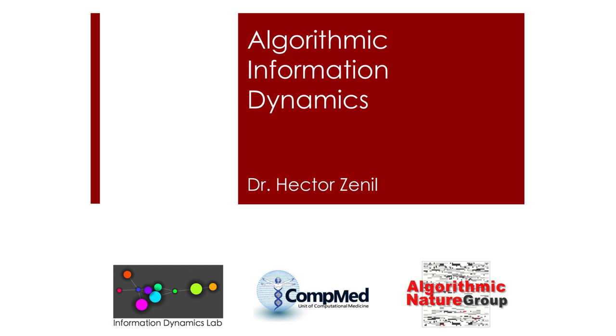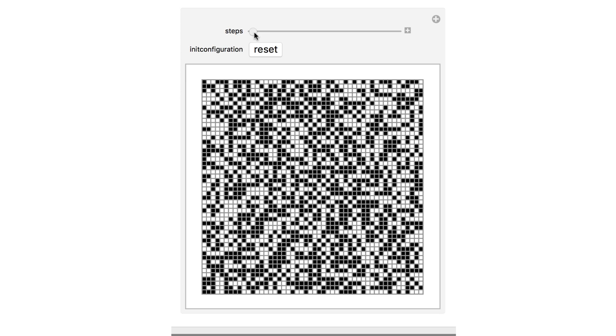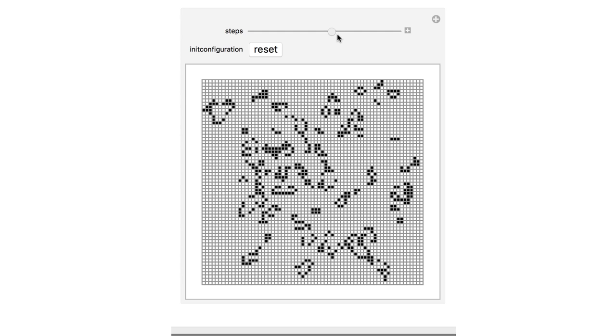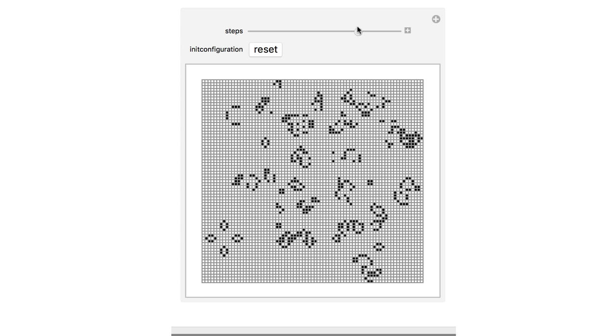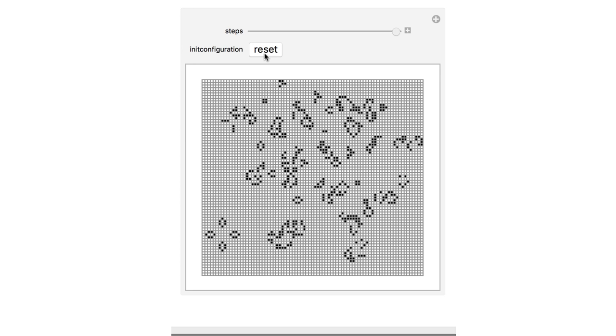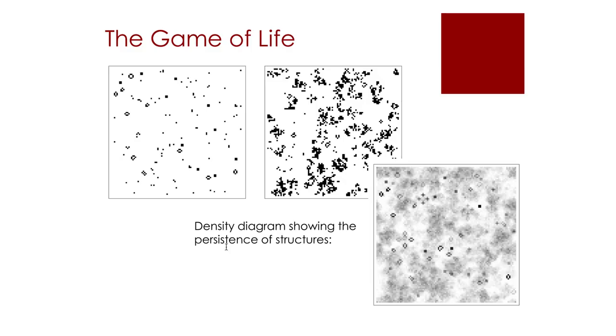To illustrate the core ideas behind the theory and see how algorithmic information dynamics can be applied, let me use a very popular discrete dynamical system, a two-dimensional cellular automaton better known as the game of life, because of its similarities to some basic but essential properties of life, such as life itself, death, reproduction, mobility and interaction. You can see how starting with some random initial configuration, persistent patterns emerge, and in the density diagram one can see that some patterns are more resilient than others.